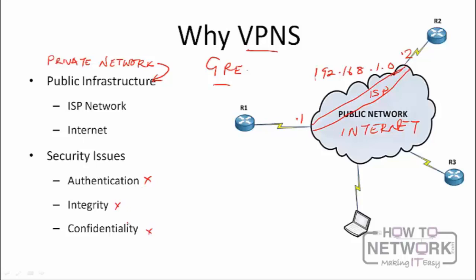There are many security issues with sending data over public infrastructure, but the three most common are authentication, integrity, and confidentiality. Authentication is verifying the identity of the sender — for example, router 1 verifying that it's actually router 2 sending traffic, or verifying that a telecommuter working from home is who they claim to be. Integrity means ensuring that data sent by R1 is exactly the data received by R2, and has not been compromised on the public infrastructure.